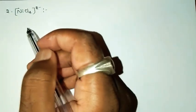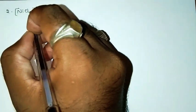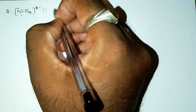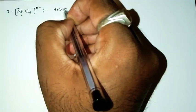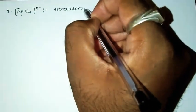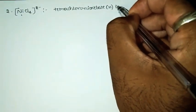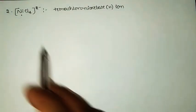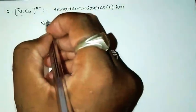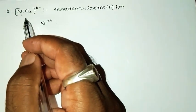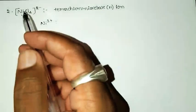The second example is [NiCl4]²⁻, with IUPAC name tetrachloronickelate(II) ion. Here nickel is again in the +2 oxidation state, and the ligand is chloro. Halogen ligands are weak ligands, so in their presence, electronic distribution in the d orbitals of the central metal ion takes place according to Hund's rule.